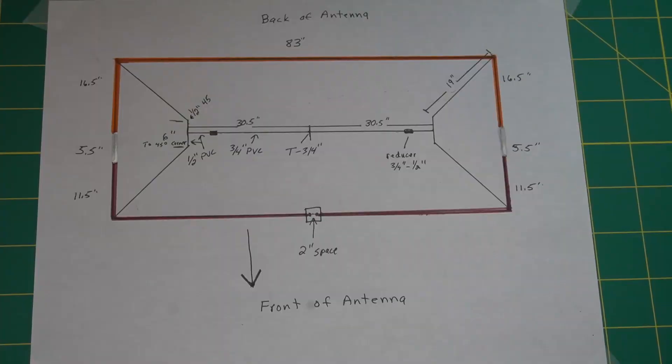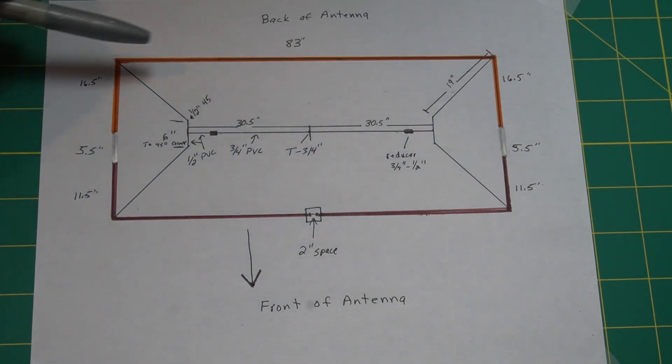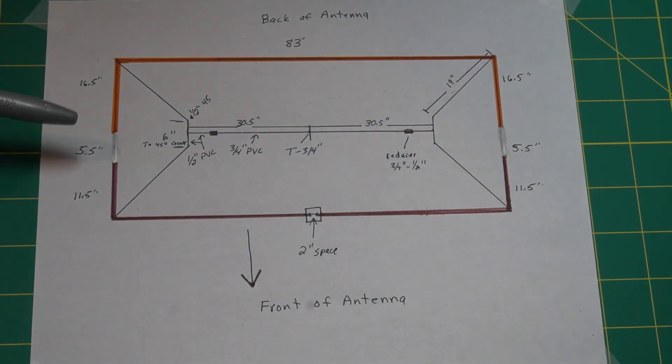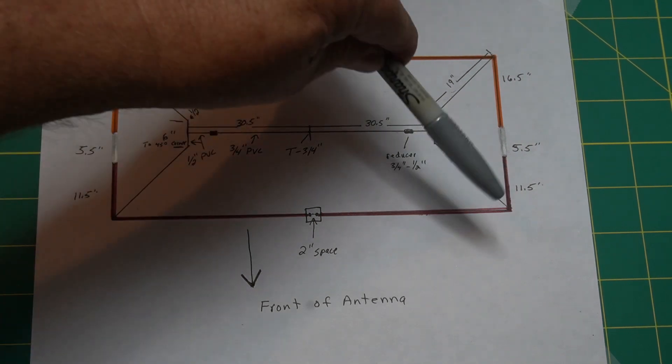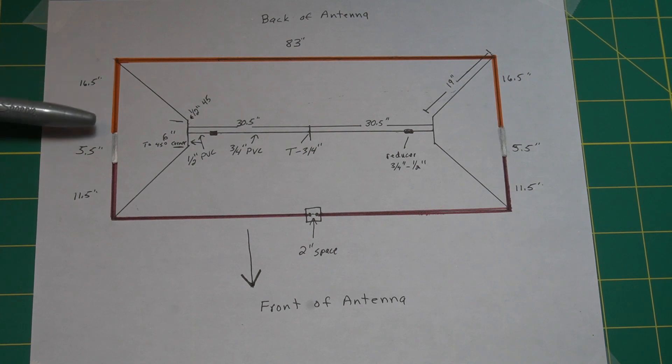Okay, this is the drawing, best I could draw it. I'm no artist, that's for sure. Yeah, this is the reflector back in this area, and this is the driven element here. The width of the antenna is 83 inches here to here and here to here. You have a 16 and a half inch piece here on the reflector, a spacer which is 5 and a half inches, and then the side of the driven element is 11 and a half inches.